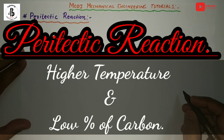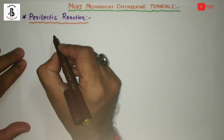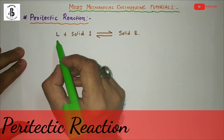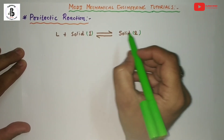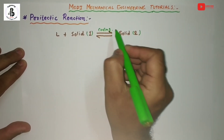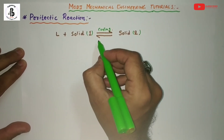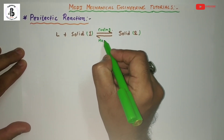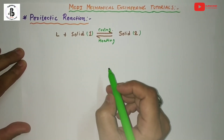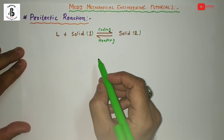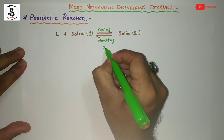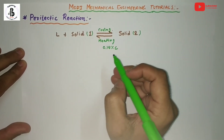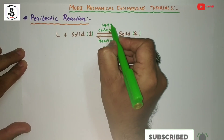Generally, peritectic reactions occur at higher temperature and low weight percentage of carbon. In peritectic reactions, a liquid phase plus one solid phase converts into a second solid. This reaction takes place during cooling, and upon heating, that solid converts back into liquid plus solid. Peritectic reactions occur at a specific composition: 0.18 percentage of carbon and a temperature of around 1493 degrees centigrade.